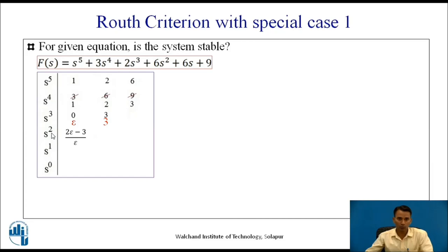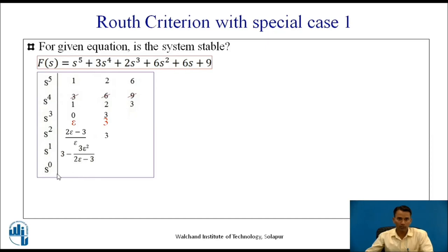For the s raised to 2 row, we compute: (2×epsilon minus 3) divided by epsilon, and (3×epsilon minus 0) divided by epsilon, giving 3. For the s raised to 1 row, the next value is (3 minus 3×epsilon squared) divided by (2×epsilon minus 3). After calculating, the next value is 0. For the s raised to 0 row, we get the value 3.